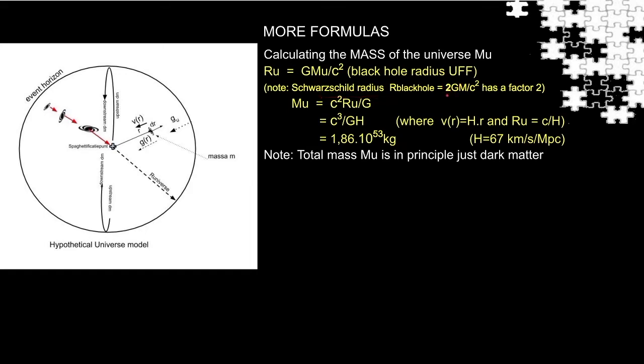The difference is caused by the escape velocity c, the speed of light, at the event horizon, while the speed of light in our model is reached in the center. The total mass of the universe is 1.86, 10 to the power 53 kilograms.